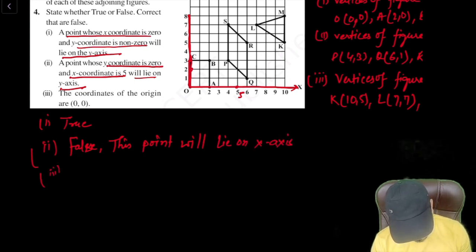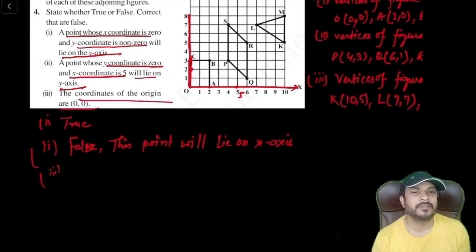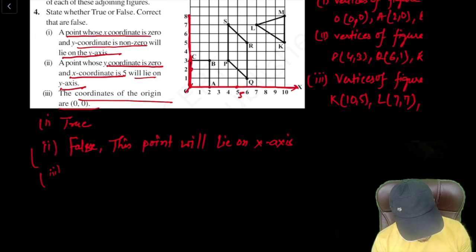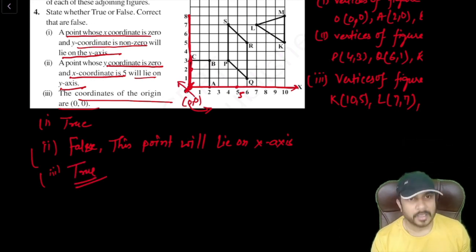Now let's say third one, the coordinate of the origin are zero comma zero. I have said it multiple times during my introduction to graph and a couple of previous questions also that always the point of origin is always zero comma zero because there is no travel on X axis, no travel on Y axis. That is why it is zero comma zero. That is a true statement.